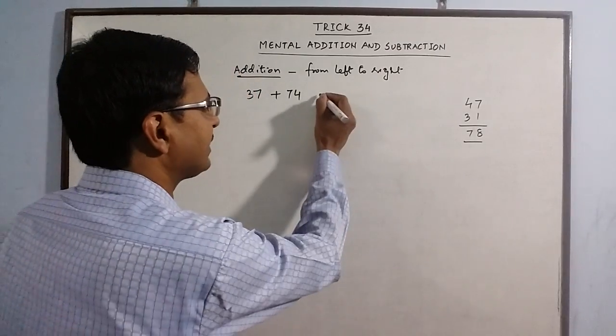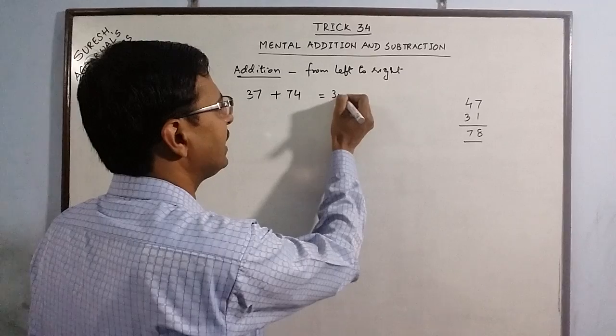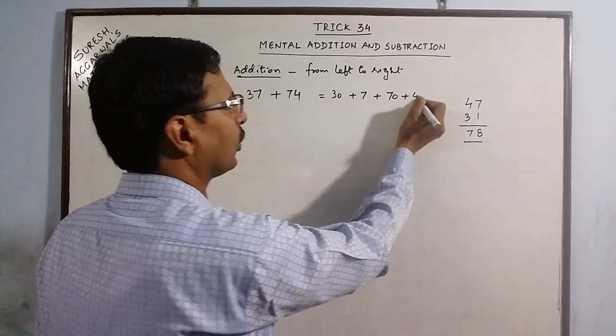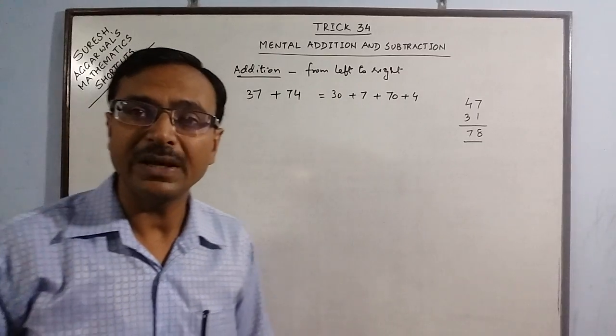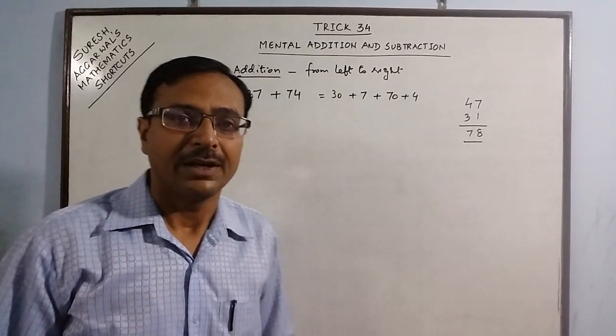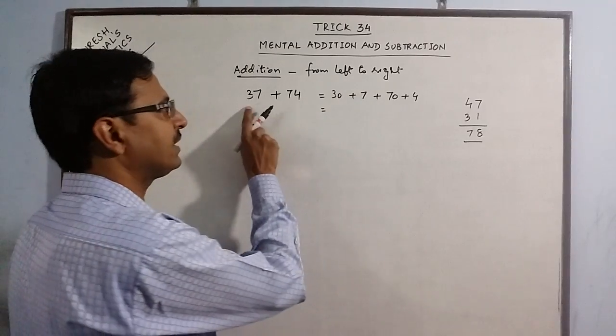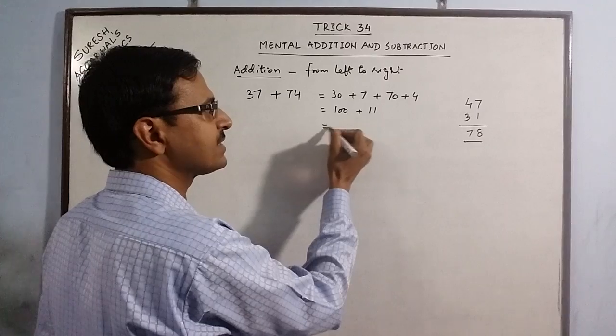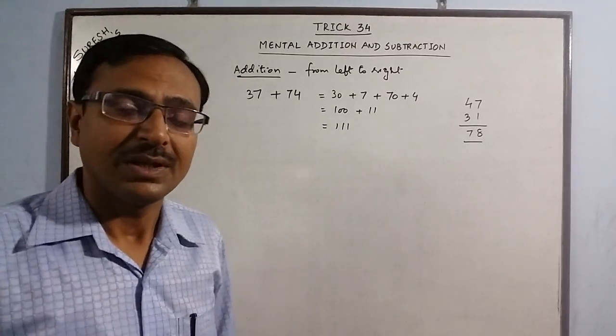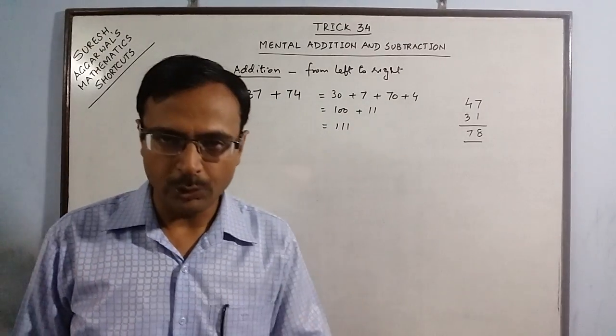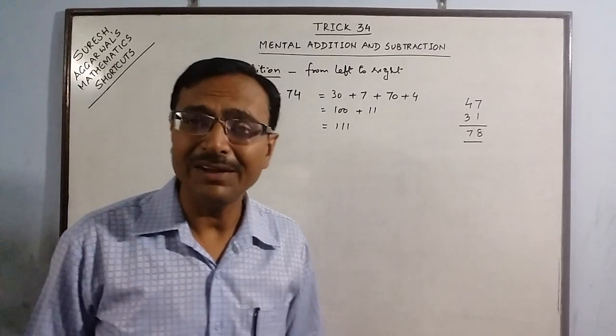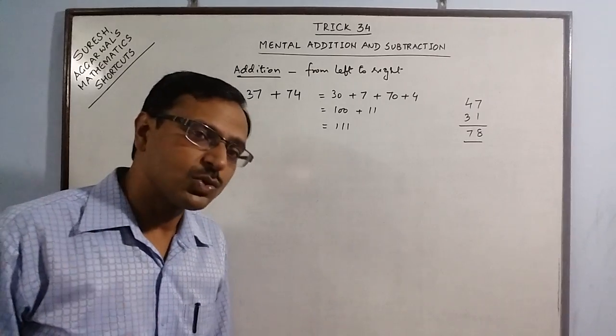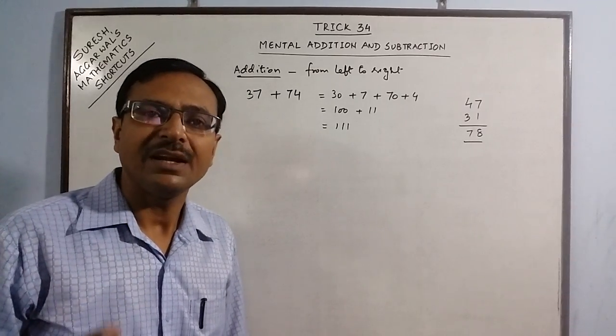I will break this down into 37 = 30 + 7 and 74 = 70 + 4. Now the problem becomes much easier to calculate. We can very easily tell that 30 and 70 is 100, and 7 plus 4 is 11. So the answer is 111. Every step which I have written on board takes place in mind, and whenever you see these types of two two-digit numbers, you can actually add them within a fraction of a second.